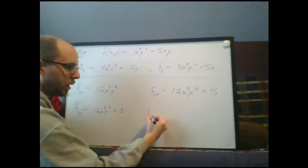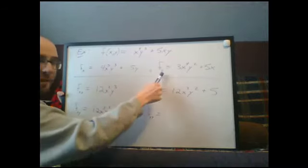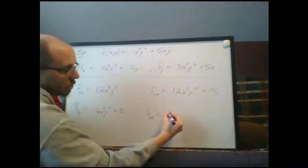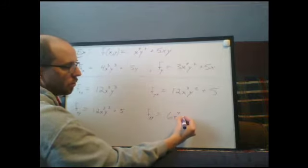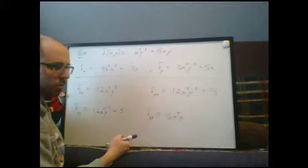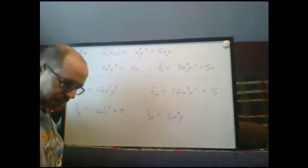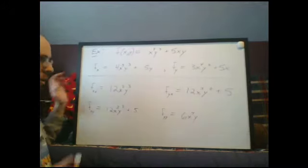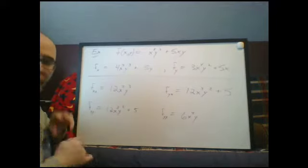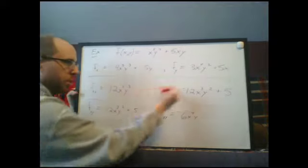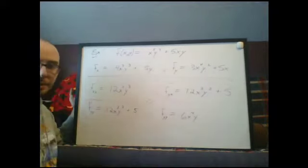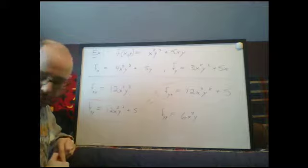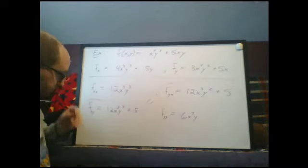For f_yy, we take f_y and differentiate with respect to y, treating x as constant. The 2 comes down from y², giving 6x⁴y, and the term 5x vanishes. So f_yy = 6x⁴y. Notice that f_xy and f_yx came out to be the same — that's worth pointing out when it happens.